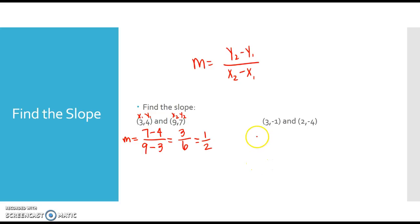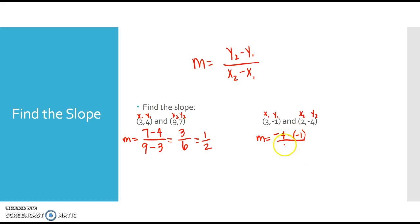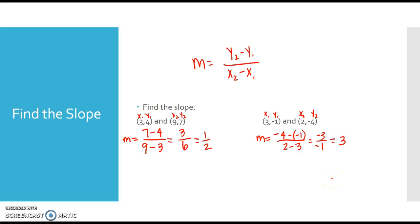Let's do it again with another pair of points. I've got (x1, y1) and (x2, y2). So y2 minus y1 is negative 4 minus negative 1, over x2 minus x1, which is 2 minus 3. Negative 4 minus a negative becomes plus, so negative 4 plus 1 is negative 3. And 2 minus 3 is negative 1. Simplifying negative 3 over negative 1 gives a positive 3. So the slope between those two points is positive 3.